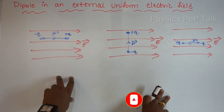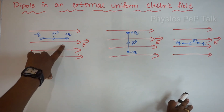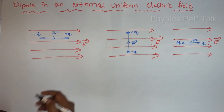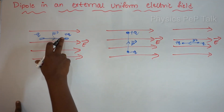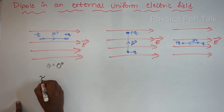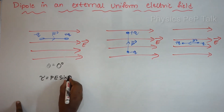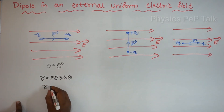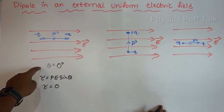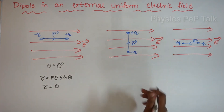Now let's study three cases. First case: when the dipole is parallel to the electric field, the angle theta is zero degrees. So torque tau equals pE sin 0 equals zero. The torque is zero when the dipole is parallel to the electric field.